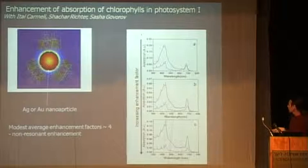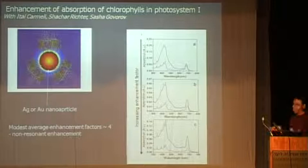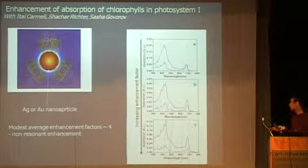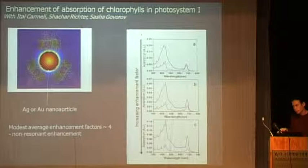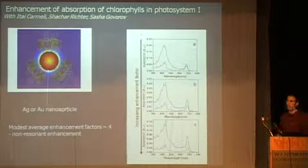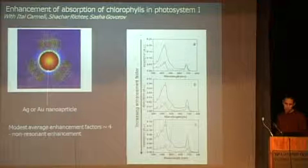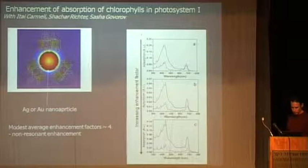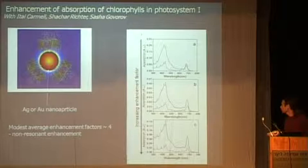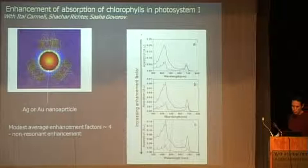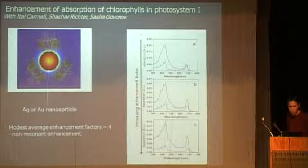More recently, we did work with Shachar Richter and Itai Karmeli on a large protein called Photosystem I — a photosynthetic protein — which we also attached to silver and gold particles. We were able to see enhancement, but much lower enhancement, which is expected because this enhancement is very strongly distance dependent. With a 10-nanometer protein and enhancement effects on the order of 2 to 3 nanometers, you enhance much less the absorption. We also found that in this case the resonance between the absorption of the molecule and the silver particle was not particularly important — different from our finding in the previous work.